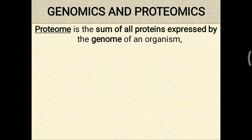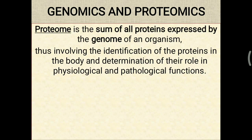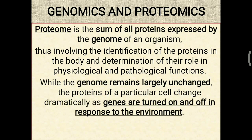Proteome is the sum of all proteins expressed by the genome of an organism. Proteome involves the identification of the proteins in the body and determination of their role in physiological and pathological function. While the genome remains largely unchanged, the proteins of a particular cell change dramatically as genes are turned on and off in response to the environment. For example, in each and every cell of a human being the same genome is present, but the beta cell of the pancreas is able to produce insulin while the thyroid cell is able to produce thyroid hormone. So the genome of the thyroid cell and beta cell of the pancreas is the same, but the proteome is different.